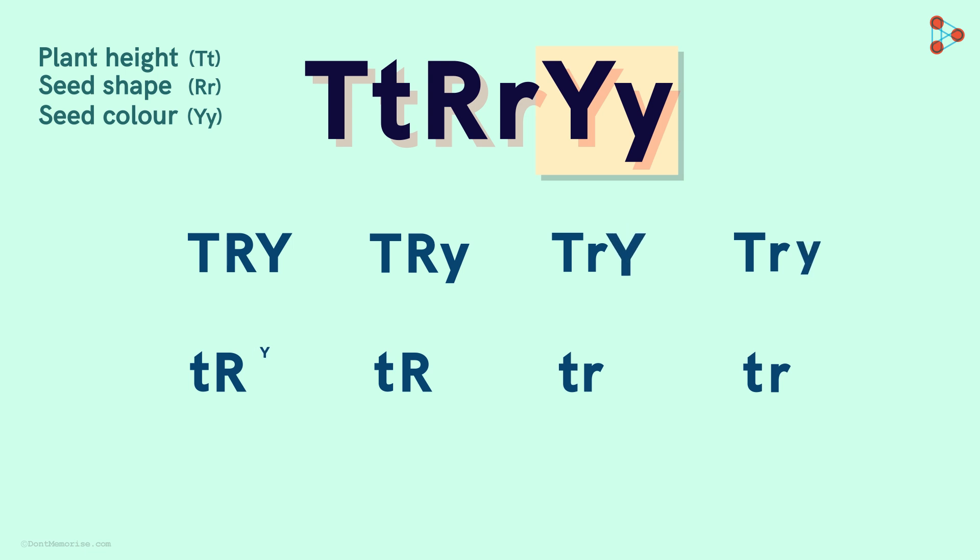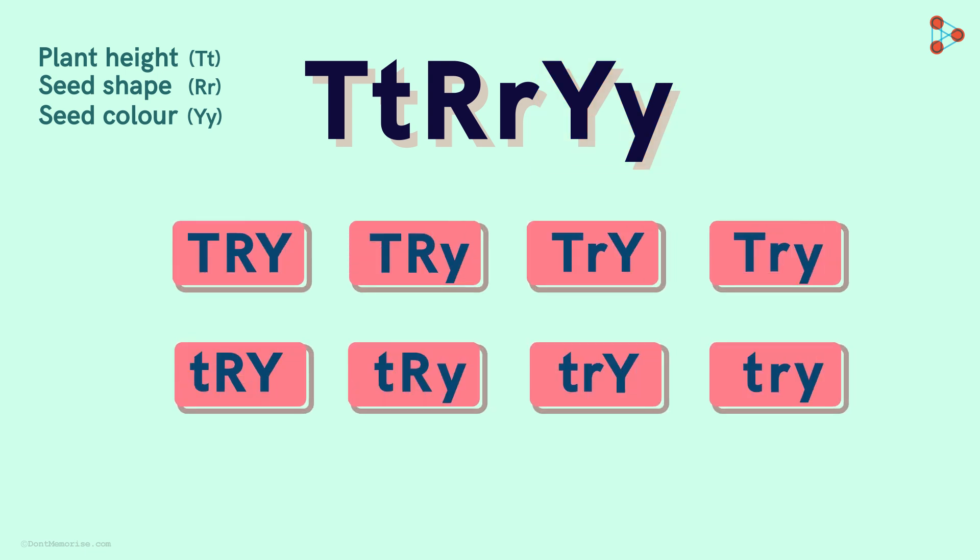This is done one after the other to find all the gametes! So a total of eight gametes, or combinations to be precise, are obtained in an individual that is heterozygous for all the three traits!